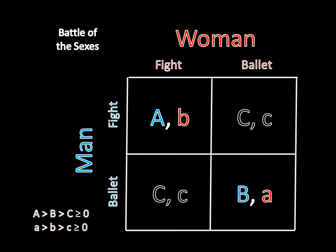And by now, you should be able to readily see that fight, fight, and ballet, ballet are both pure strategy Nash equilibrium. The remaining question is whether there will be a mixed strategy equilibrium.